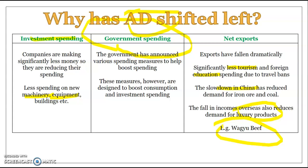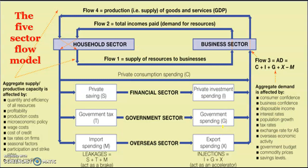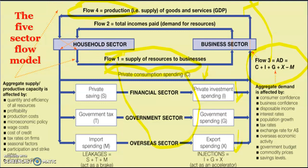Looking at the circular flow model, consumption spending has fallen, private investment spending has fallen, and export spending has fallen, so overall aggregate demand has fallen. This leads to less expenditure, so businesses don't produce as much. Because they're not producing, they don't need workers, which leads to less demand for resources and less income — more people are unemployed and businesses aren't hiring — which then flows on to even less consumption spending and multiplies through the economy.